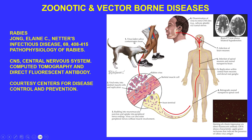In rabies pathophysiology, virus-laden saliva contaminates tissue at the bite, the virus enters skeletal muscle, moves to the neuromuscular junction, then into peripheral nerve endings. Retrograde axonal transport carries it to the spinal cord and ultimately to the brain. CT scans show bilateral hypodensities caused by the virus.